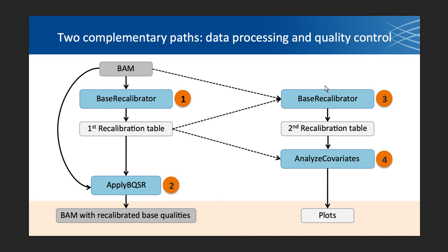The workflow has two complementary paths. To get going with your analysis, you only really have to do the left-hand side. For QC and plots, you would additionally do the right-hand workflow. In step one, you take a BAM, run it through BaseRecalibrator, and get a recalibration table. Then to apply recalibration, you feed ApplyBQSR the recalibration table and your BAM, and you get a BAM out with recalibrated base qualities. To produce plots for QC, you take your initial BAM and the first recalibration table, give it to BaseRecalibrator again to generate a second recalibration table, and then feed both tables to AnalyzeCovariates to make the plots.